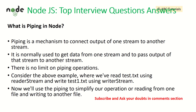What is piping in Node? Piping is a mechanism to connect the output of one stream to another stream. It is normally used to get data from one stream and pass the output to another stream. There is no limit on piping operations. Piping is used to chain more than one event — it is a mechanism to connect the output of one stream into another.